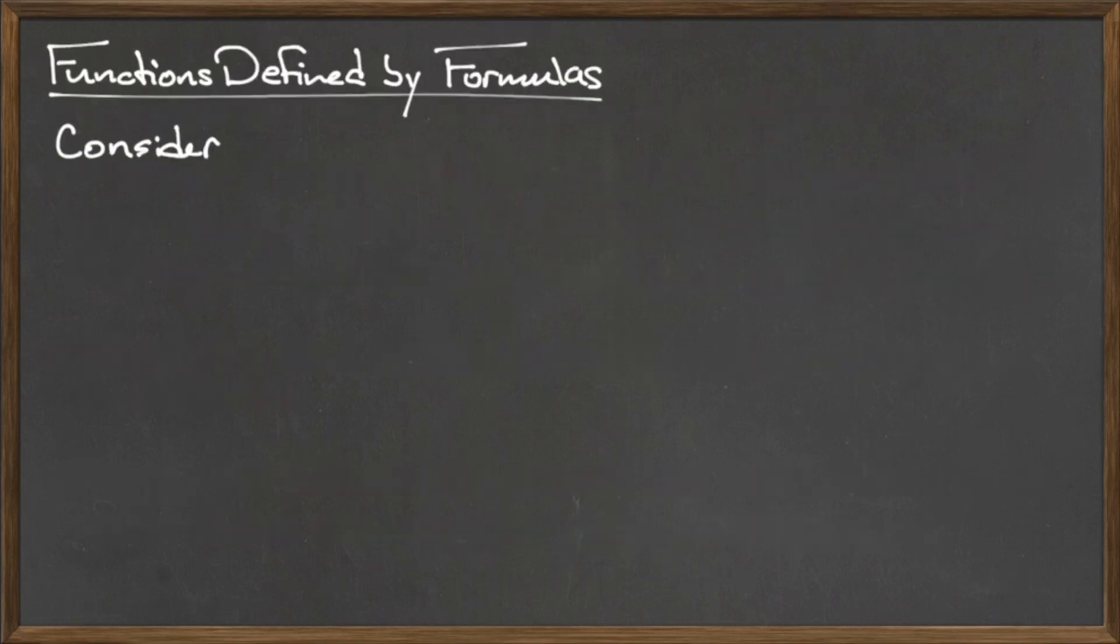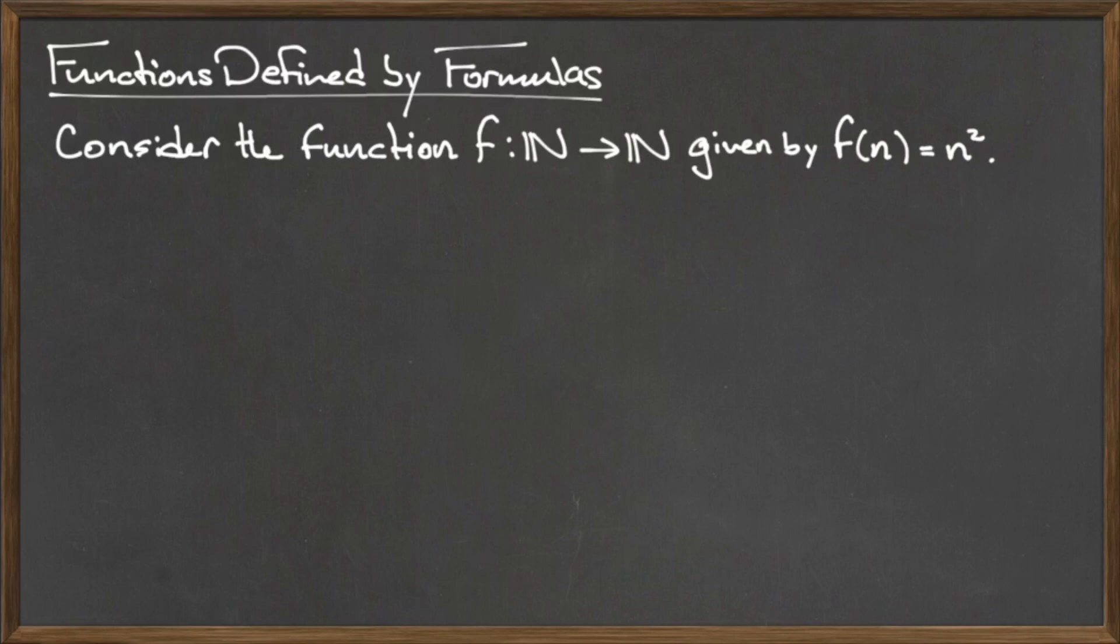The most common way to define a function is with a formula or equation. For example, consider the function f from the natural numbers to the natural numbers, given by f(n) = n². In this function, both the domain and the codomain are the same set.